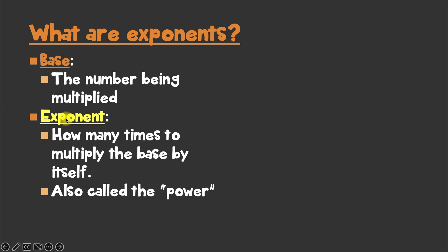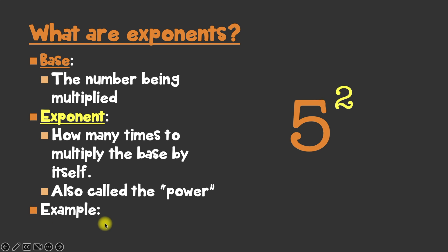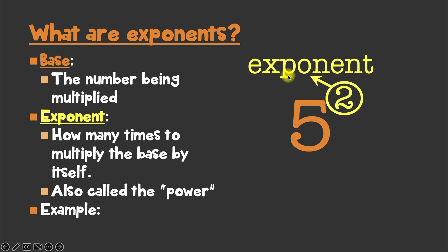So this might be a topic that might be better taught by an example. So here we go! And there are these two separate parts. This number here, written in a smaller size in the upper right corner, is called the exponent. Which means that this number here — the 5, the number written in a bigger size — is called the base.